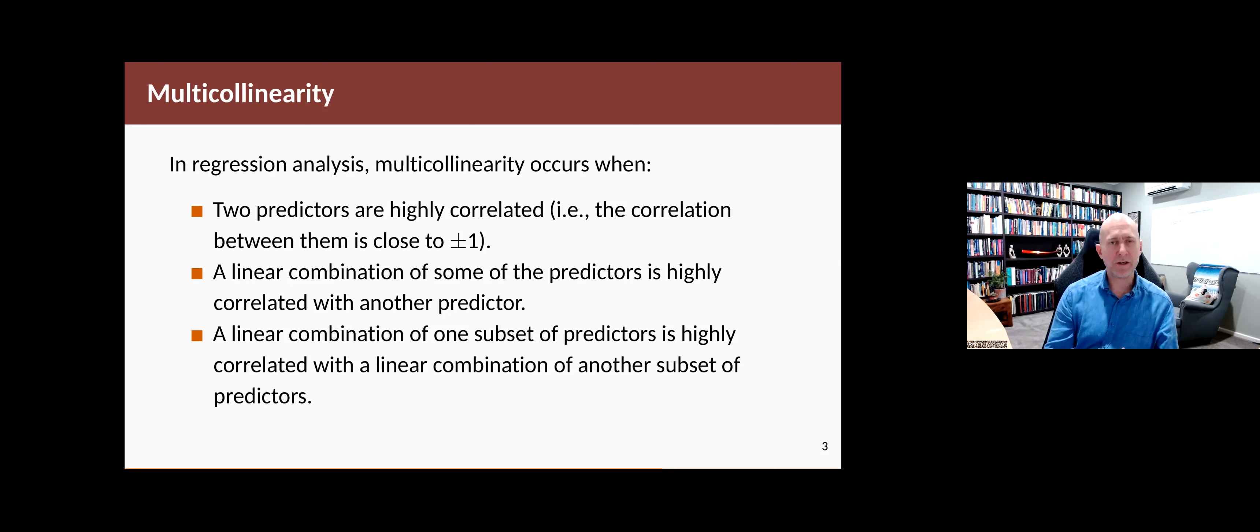That happens in the dummy variable trap where you might put in a dummy variable for every seasonal period. And as we've learned, you don't need that. You need one less than that. But if you put them all in, you fall into this problem of multicollinearity because the last seasonal dummy that you add is actually one minus the sum of the other ones. And so you end up with a linear relationship between the predictors. It can also happen in a third way where you get a linear combination of some set of predictors is highly related to a linear combination of another set of predictors. Any of these things cause multicollinearity.